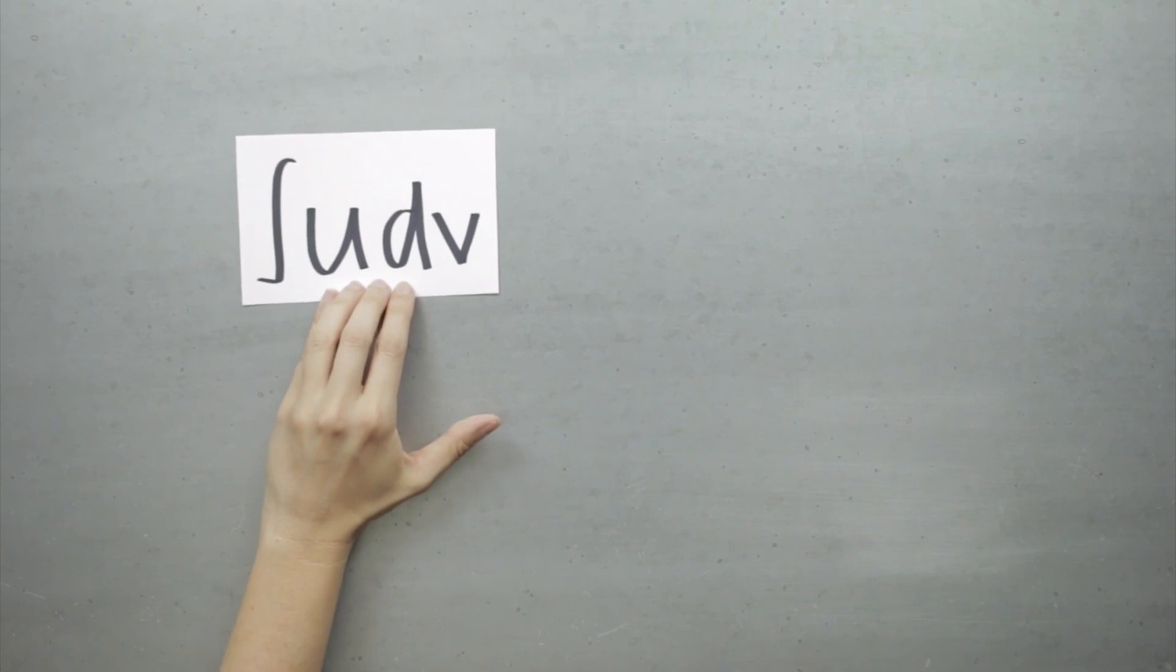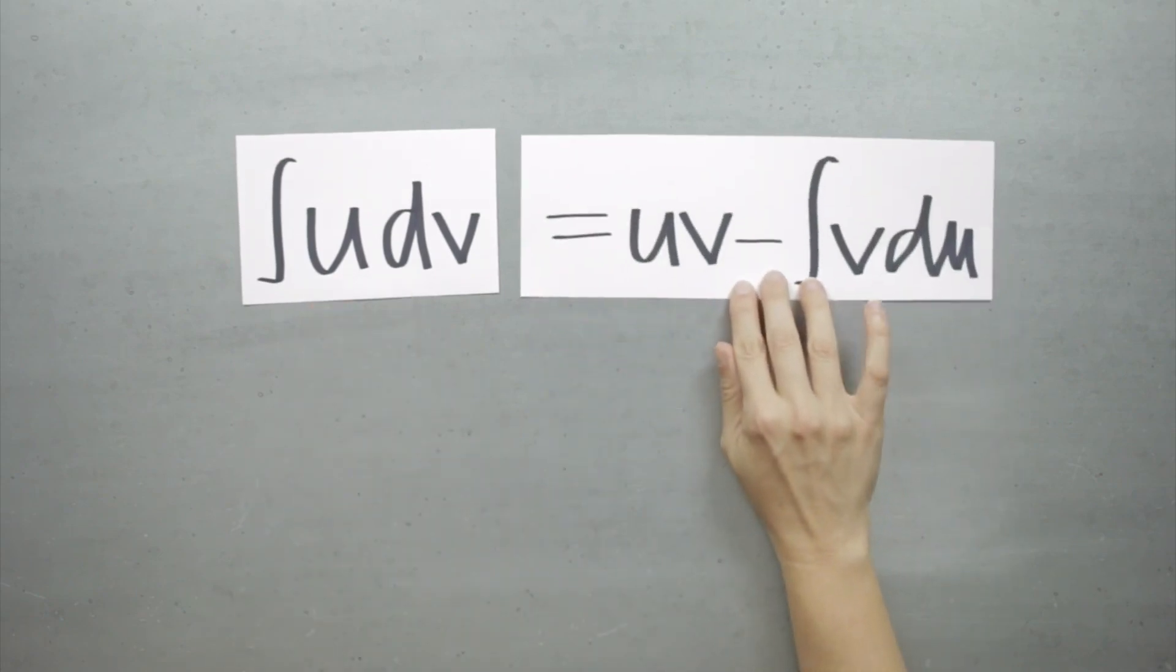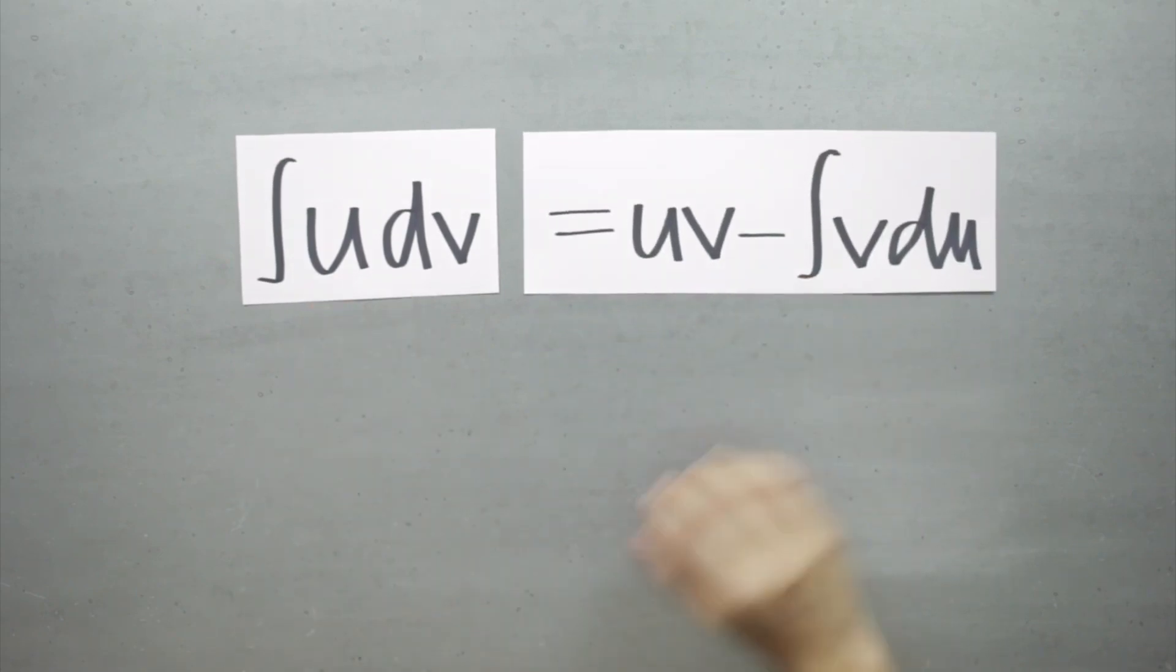Integration by parts is a pretty simple formula if we're just going to memorize it. After all, we only have to remember that the integral of u dv is equal to u times v minus the integral of v du. But what's really going on under the surface of this formula? How does integration by parts even work?